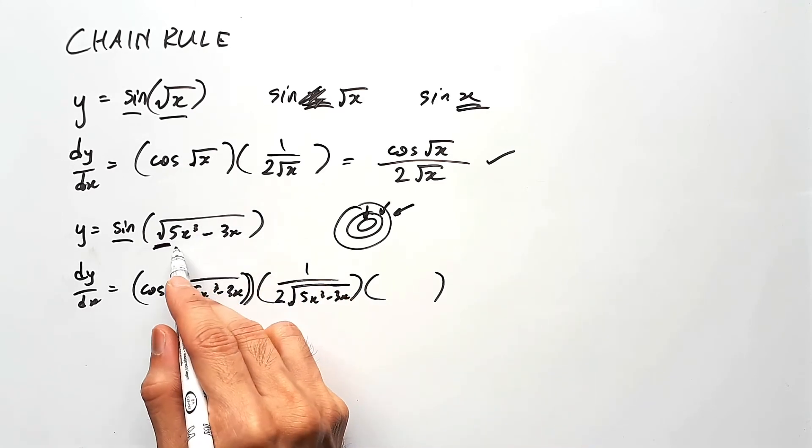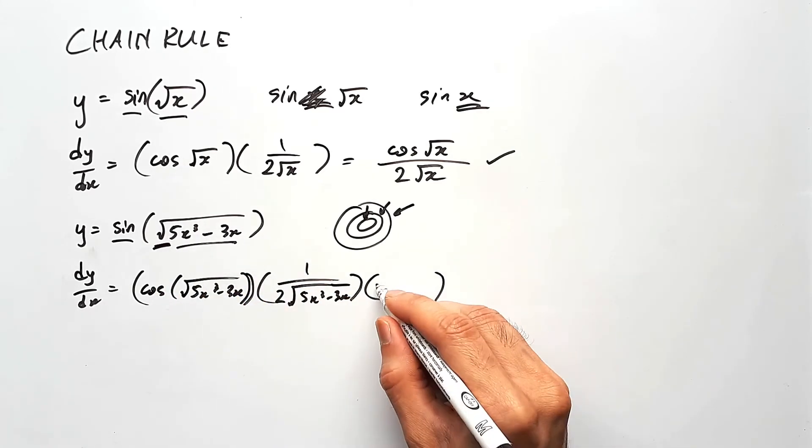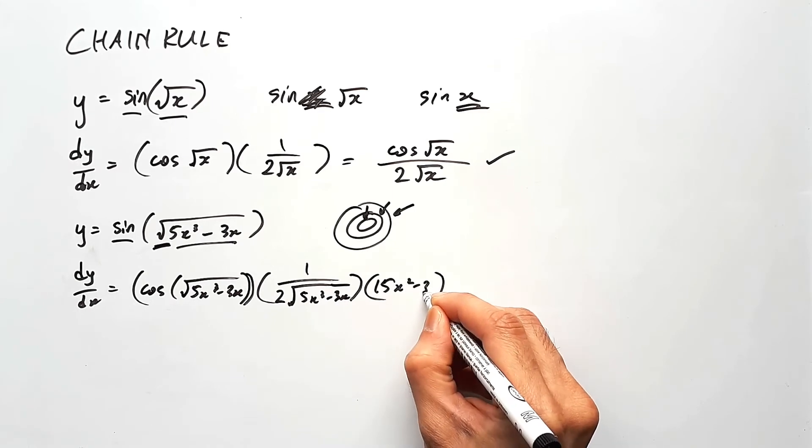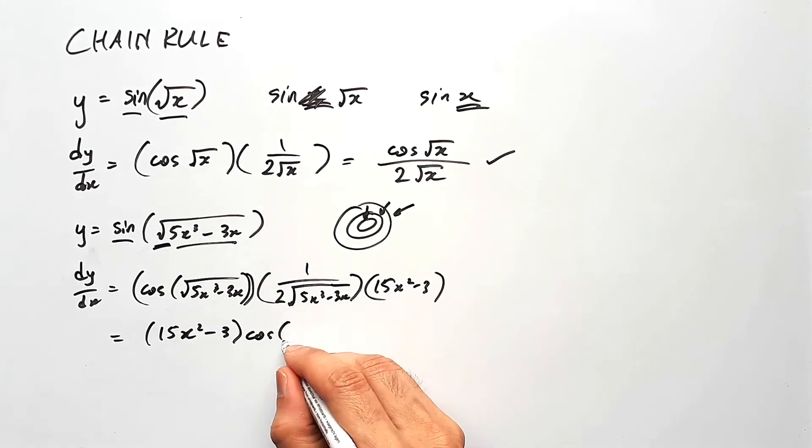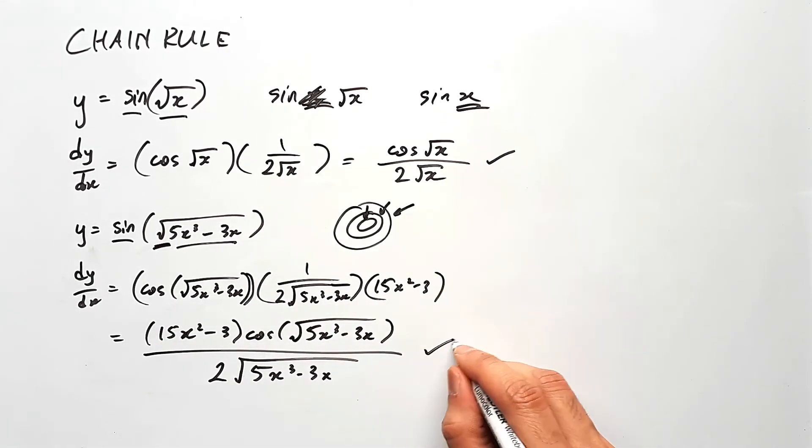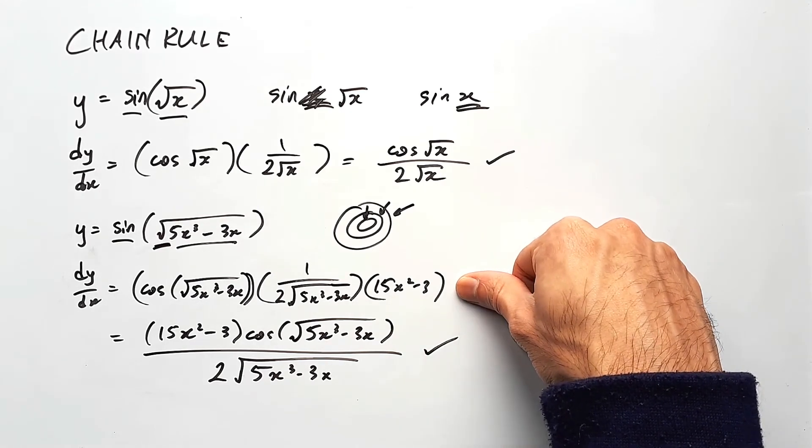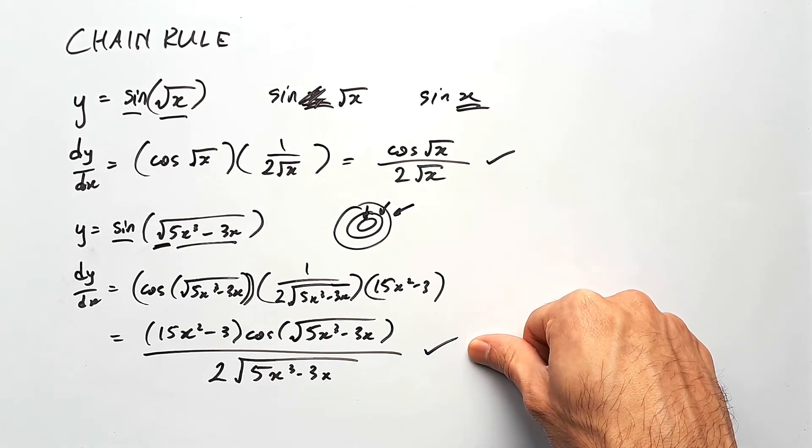And finally, you deal with the inside, the cubic, that's going to be 15x squared minus 3. And then you can rearrange it to make it look a bit neater. So keep in mind, this is basically the differentiation step, while this is just a simplification.